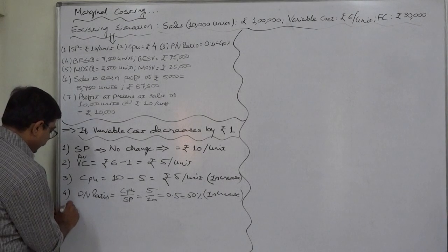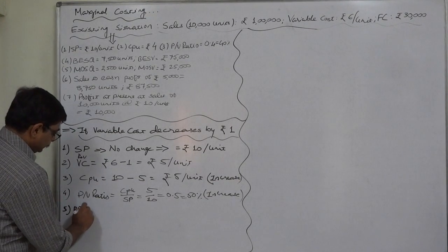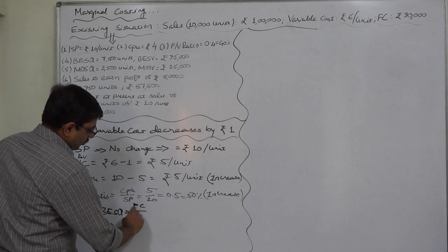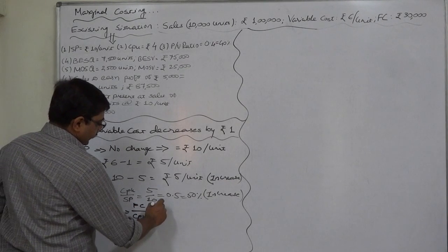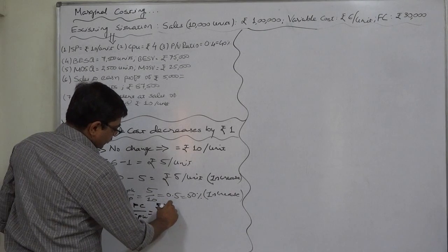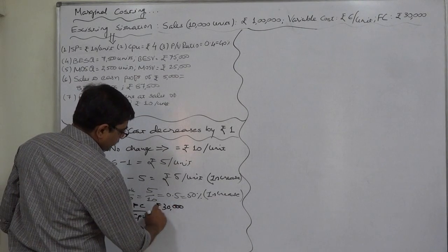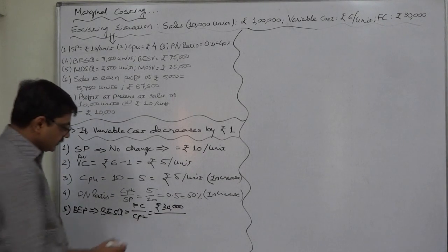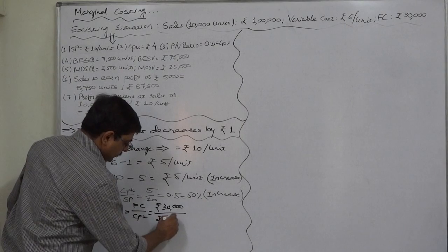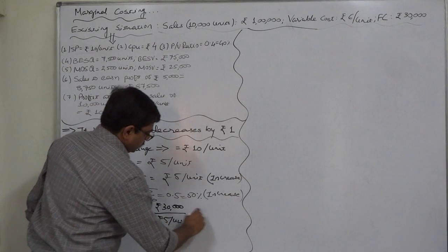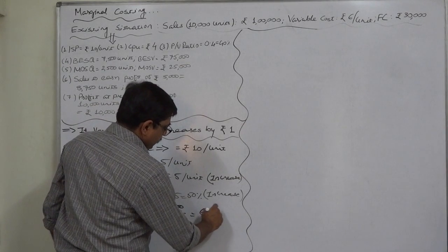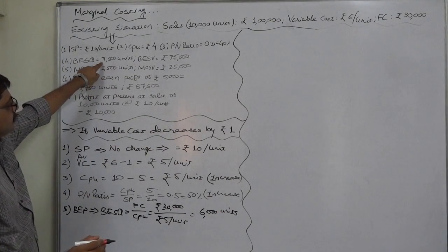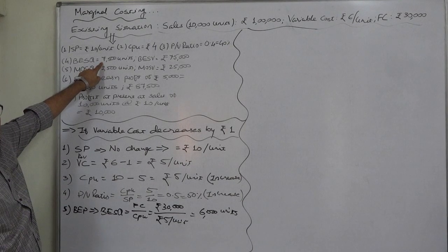Now let us check the effect on the break-even point. Break-even sales quantity equals fixed cost divided by contribution per unit. Fixed cost remains rupees 30,000 — there is no change in fixed cost due to a change in variable cost, as both are different things. So break-even sales quantity comes to 6,000 units, compared to 7,500 units in the existing situation.